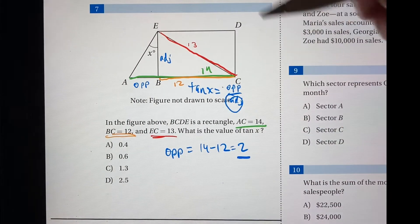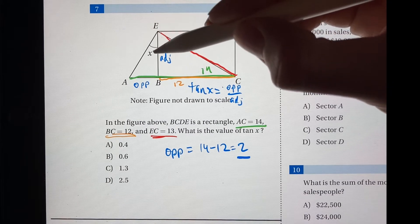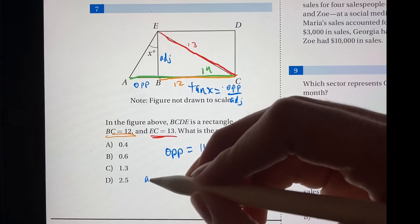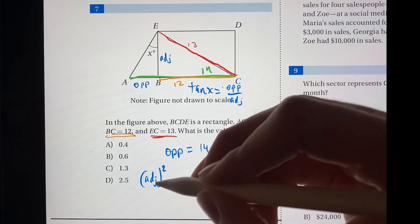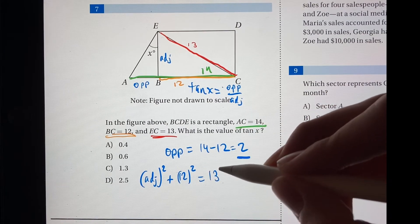So now all we need is the adjacent side. So we can solve for that using Pythagorean theorem. And so the adjacent side is part of this triangle. Using Pythagorean theorem, adjacent side squared plus 12 squared equals 13 squared.